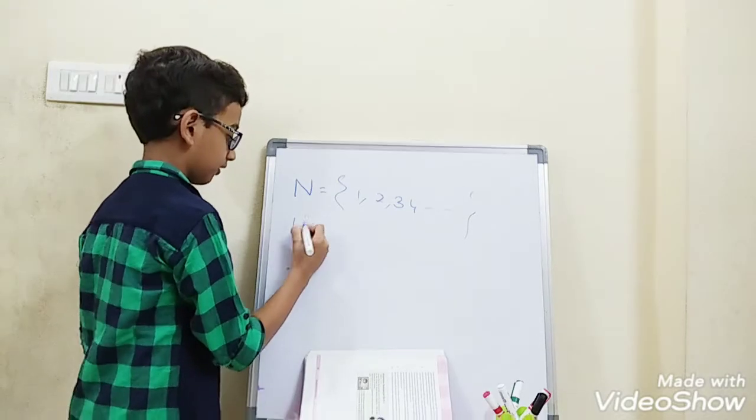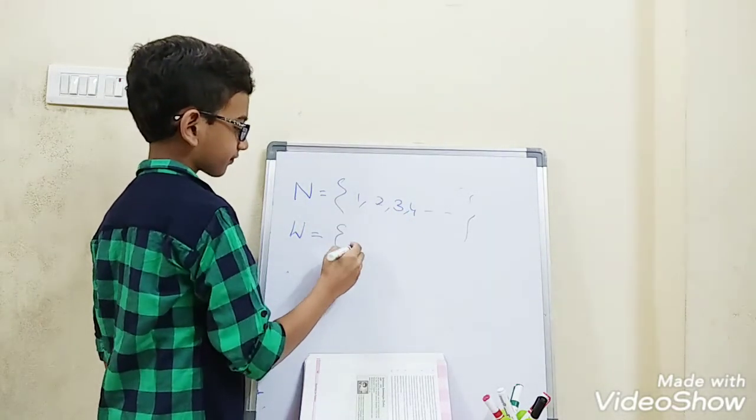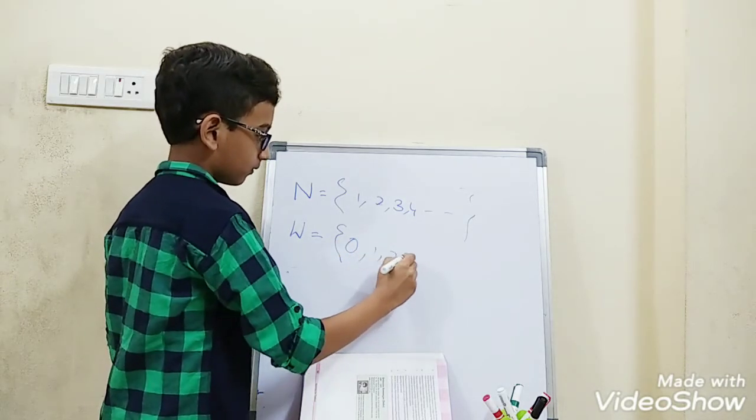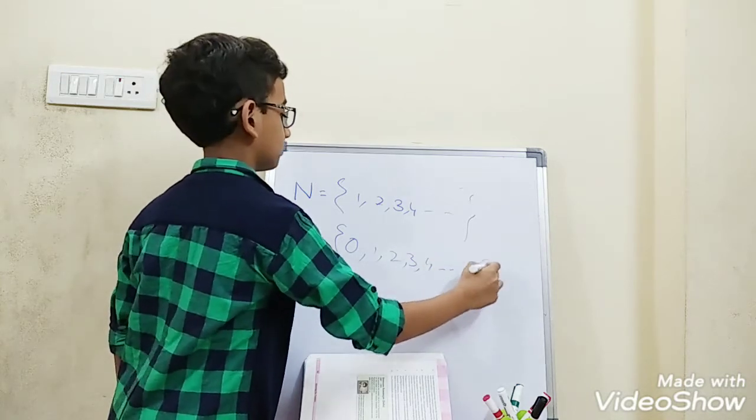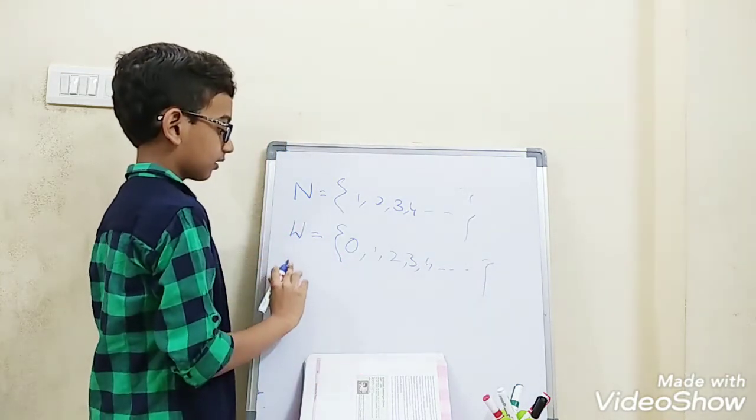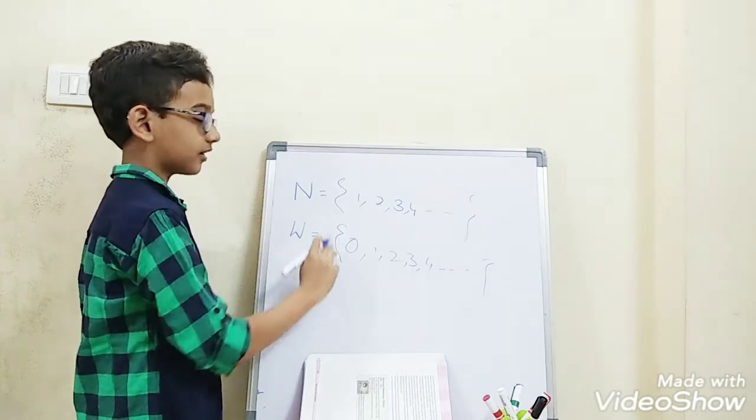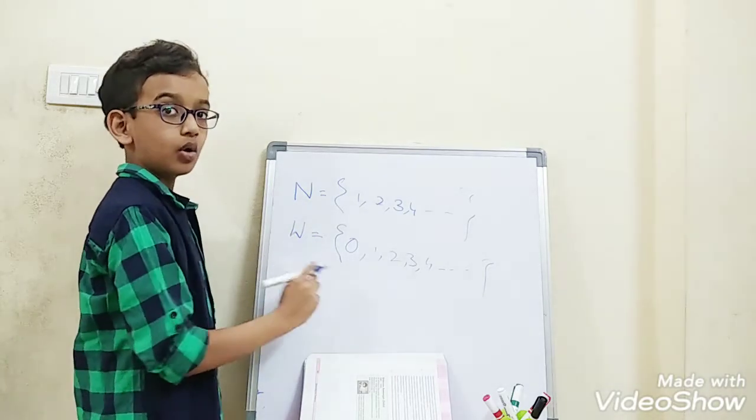Let's learn what are whole numbers. Whole numbers are included with 0, 1, 2, 3, 4 and so on. These are called whole numbers. All whole numbers are not natural numbers, but all natural numbers are whole numbers.